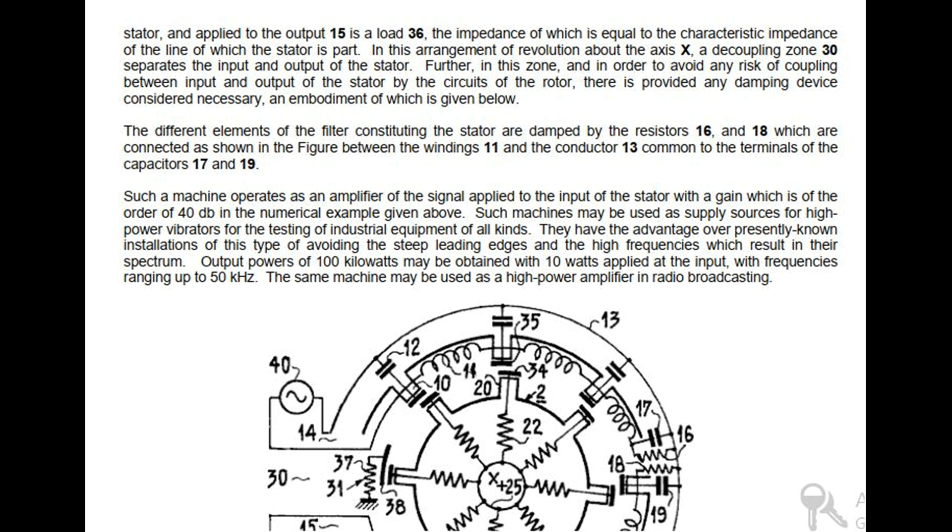Such a machine operates as an amplifier of the signal applied to the input of the stator with a gain which is of the order of 40 dB in the numerical example given above. Such machines may be used as supply sources for high power vibrators for the testing of industrial equipment of all kinds. They have the advantage over presently known installations of this type of avoiding the steep leading edges and the high frequencies which result in their spectrum. Output powers of 100 kW may be obtained with 10 watts applied at the input, with frequencies ranging up to 50 kHz. The same machine may be used as a high power amplifier in radio broadcasting.